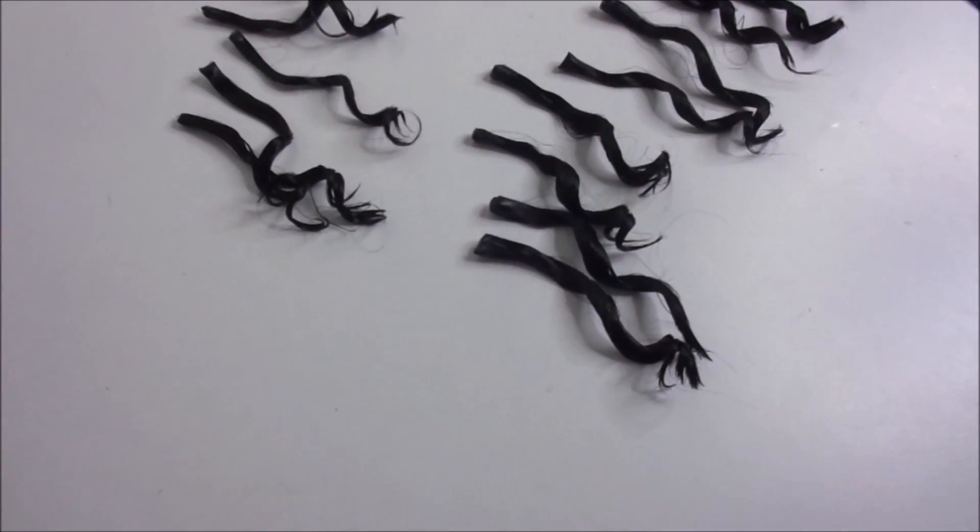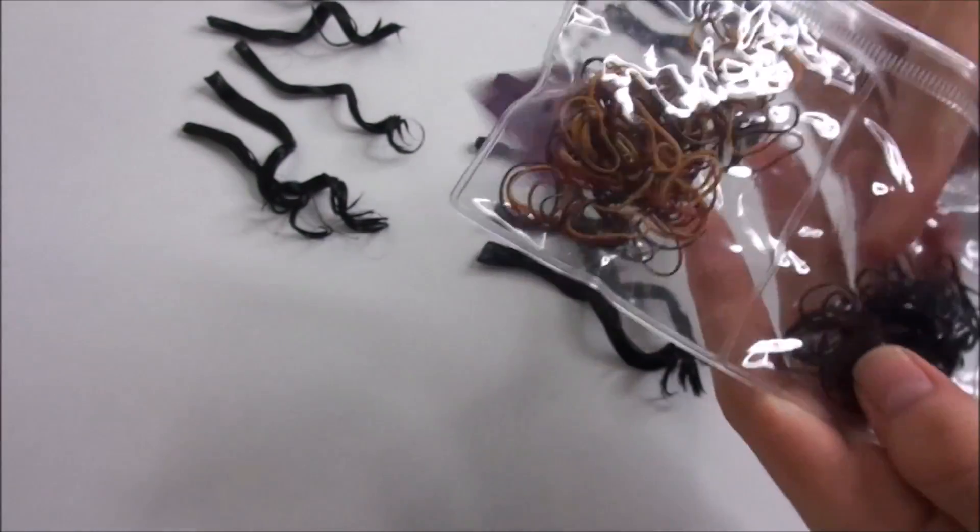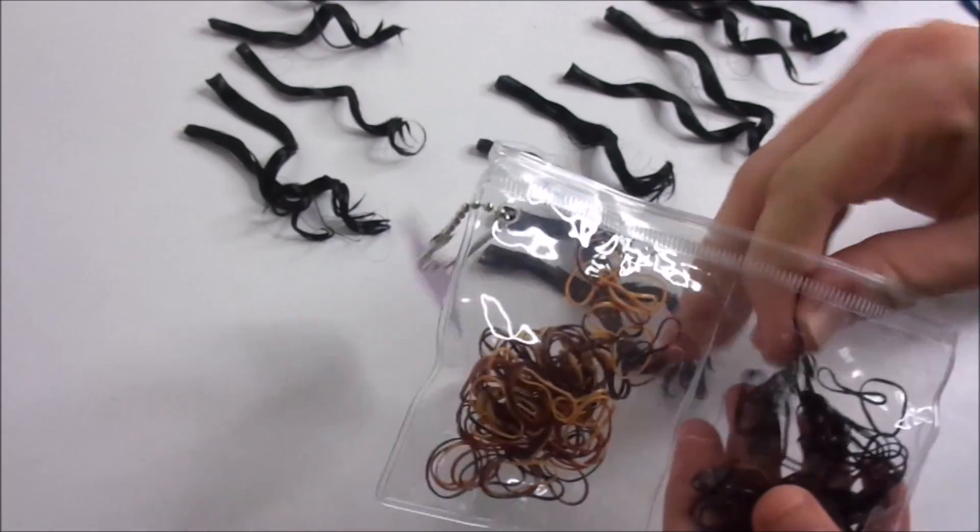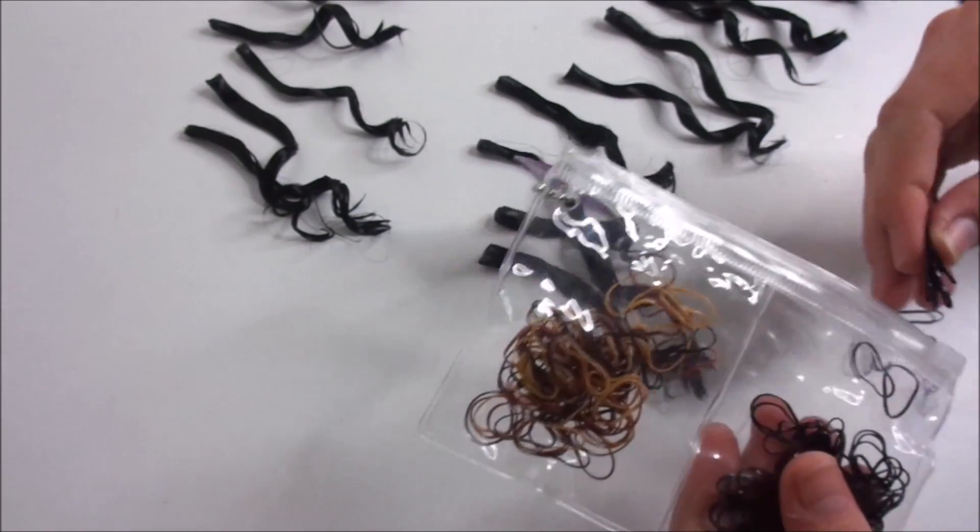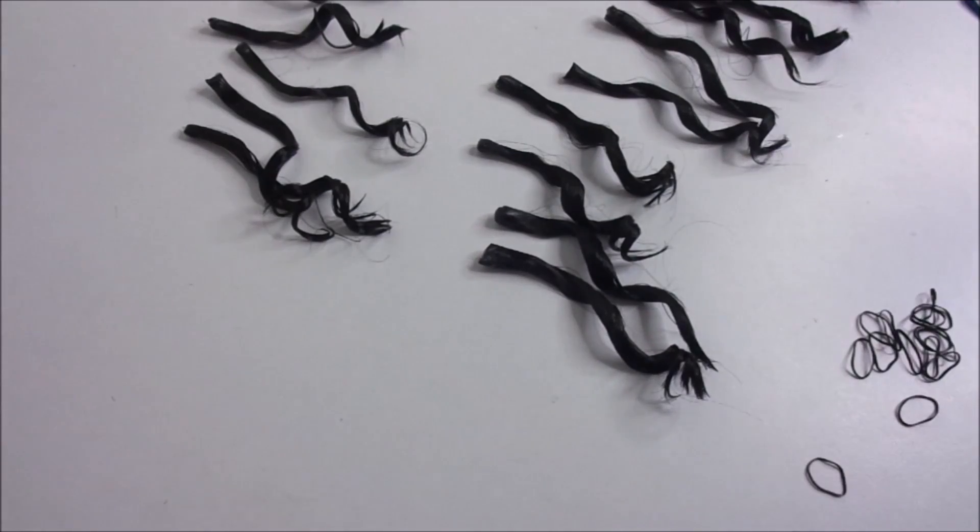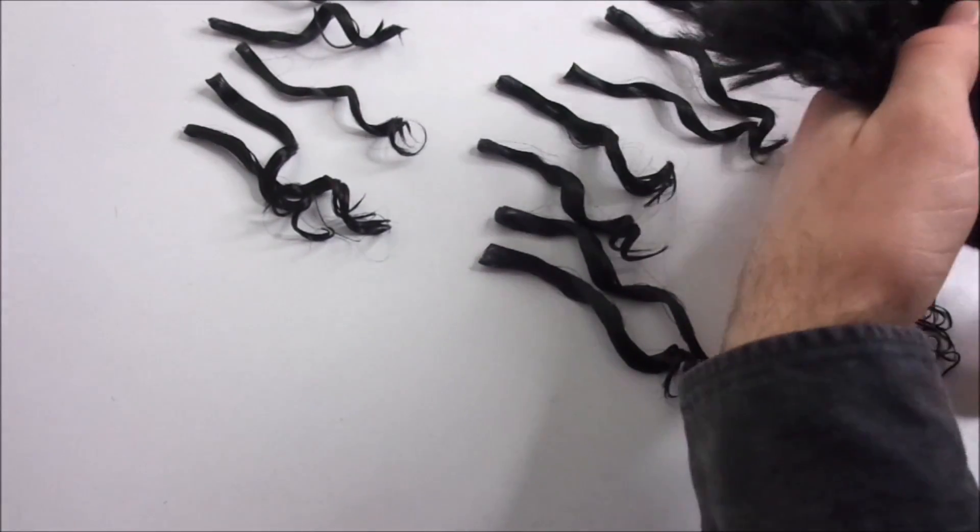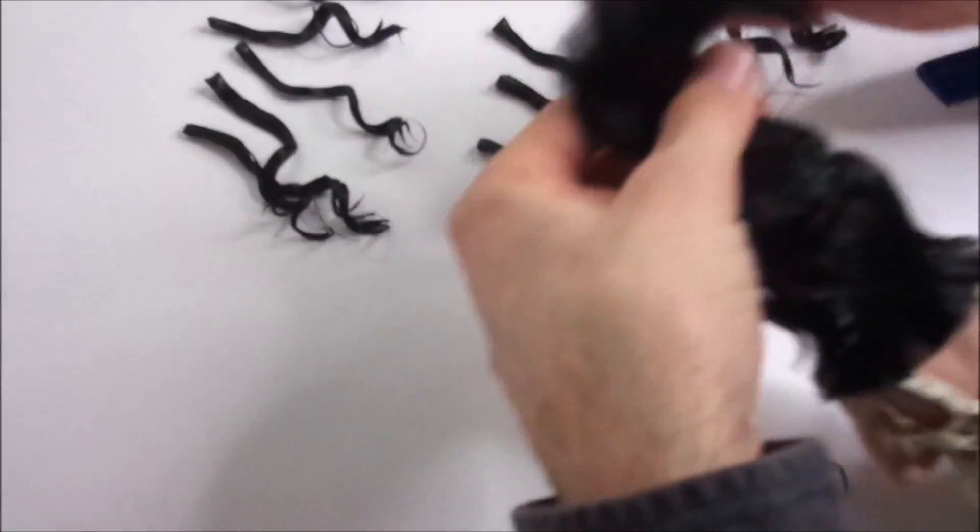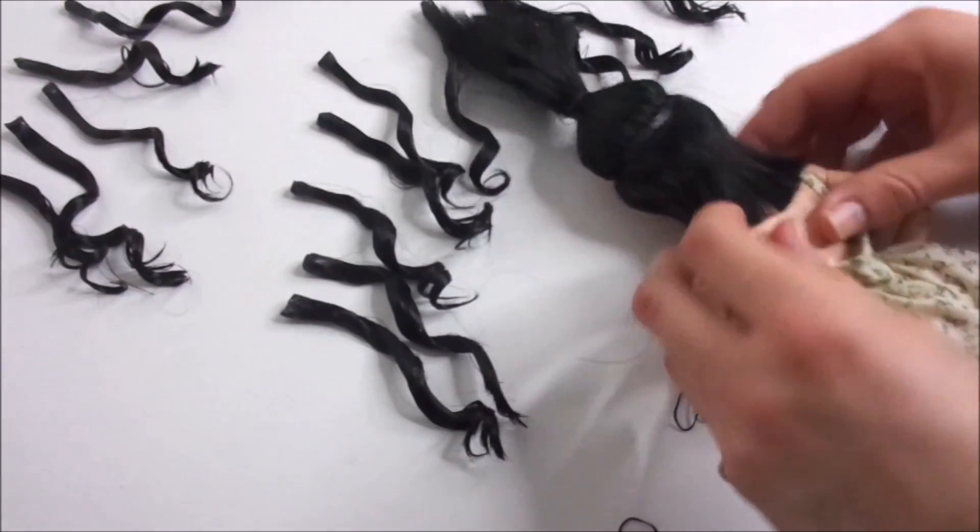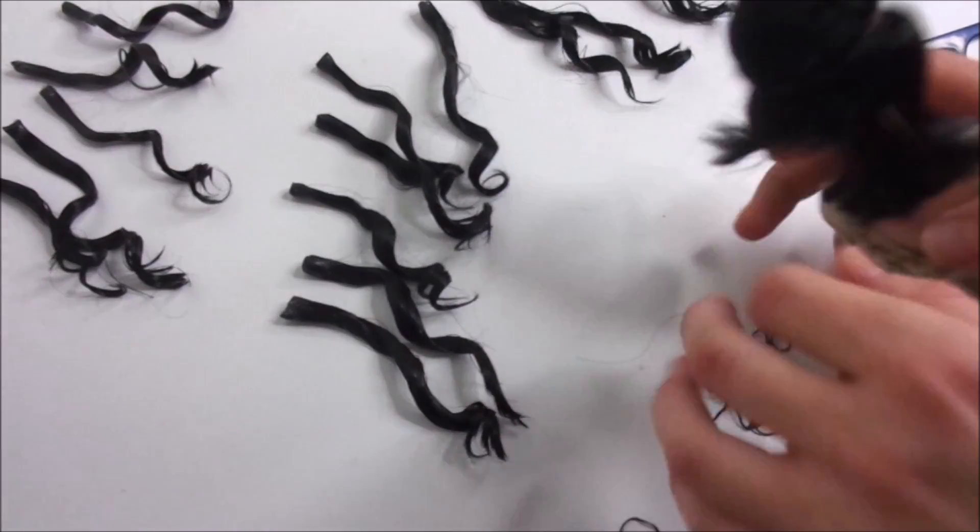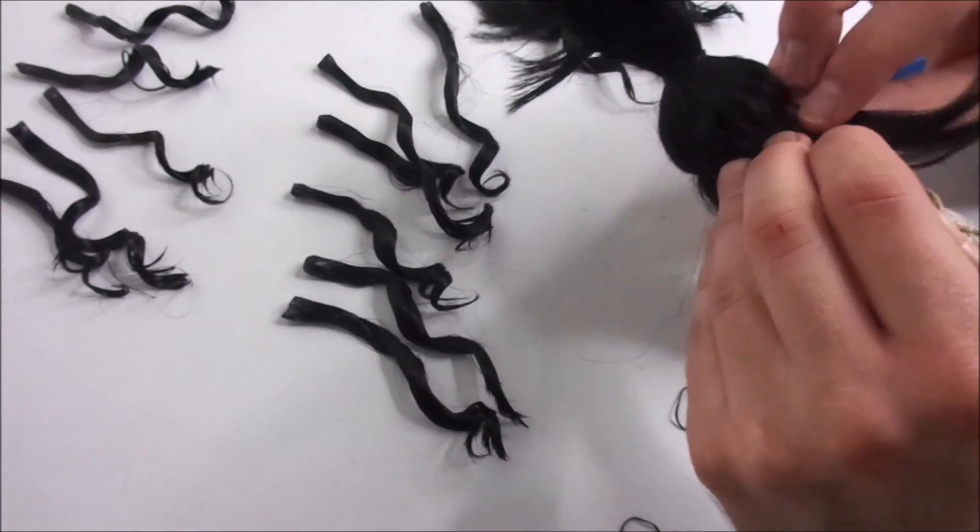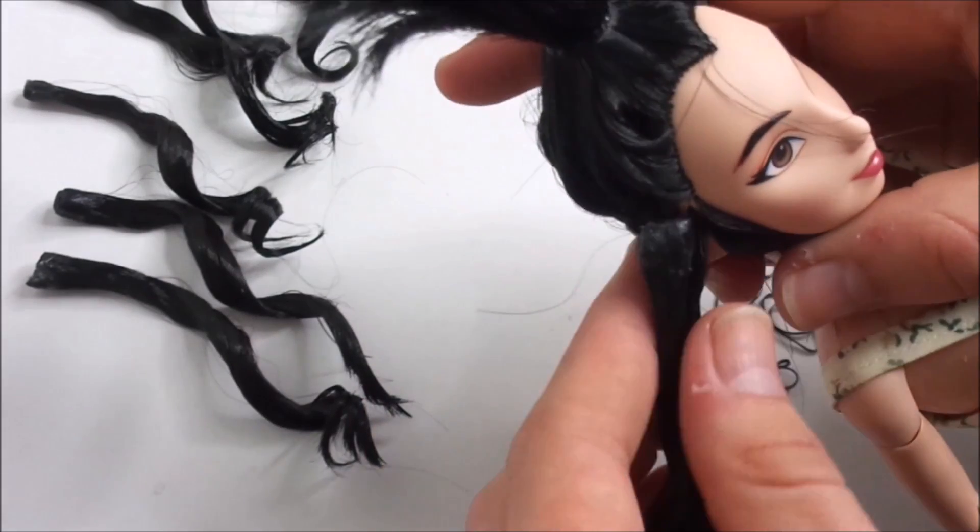To install the extensions I take a bunch of small elastic bands that match the hair color. I section off the bottom of Mulan's hair and tie the top parts out of the way. Then I take a small section of her rooted hair and tie it together with an extension.